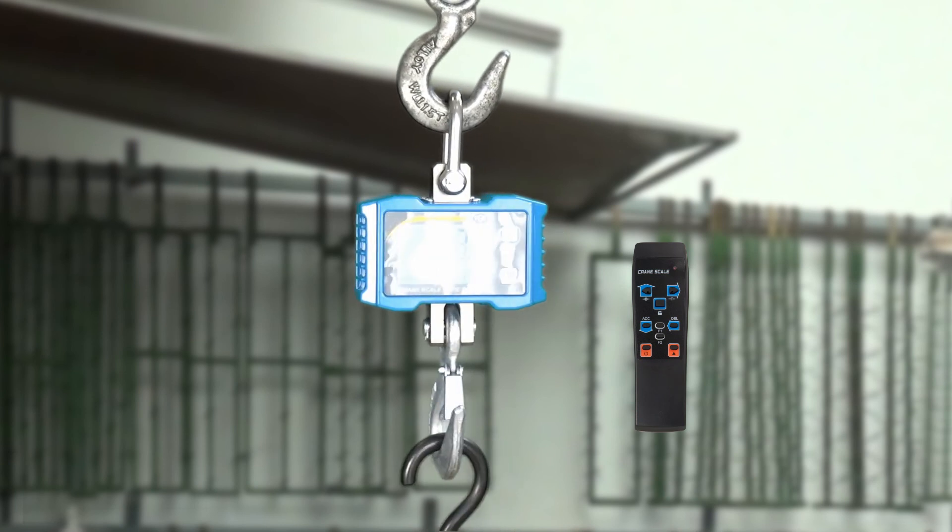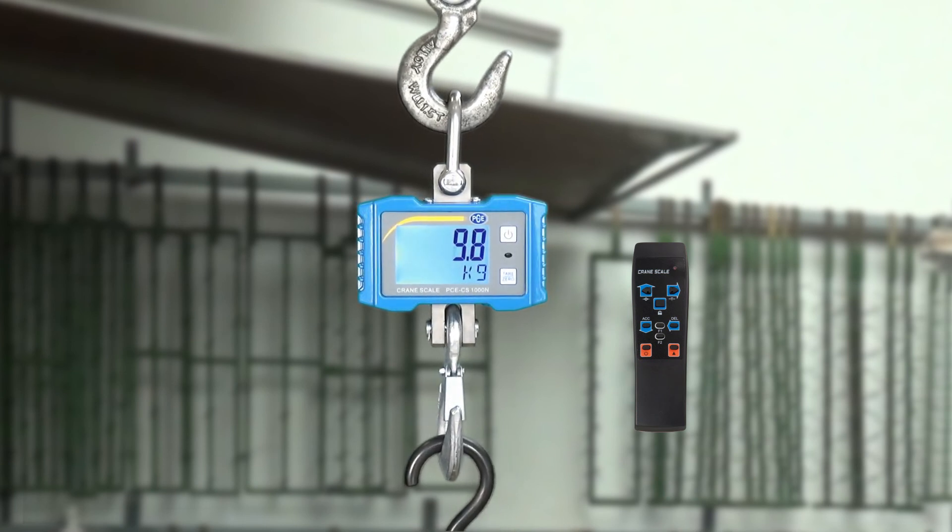When I now unload the crane scale and load it with 10 kilos, I can through the summing of the load, ACC on the remote press. ACC is shown in display. I can let show the whole mass. Before it was 5 kilo, plus 10, or 15.